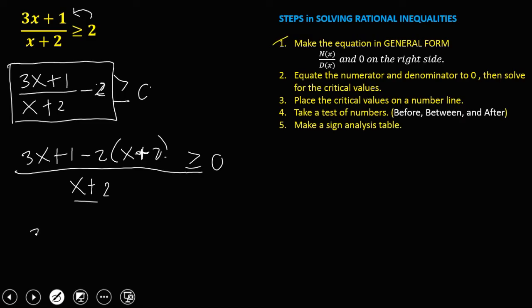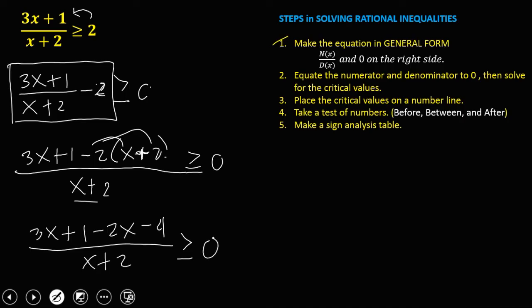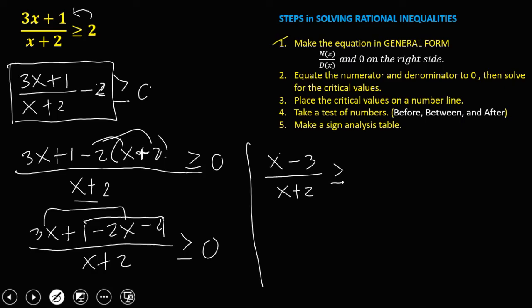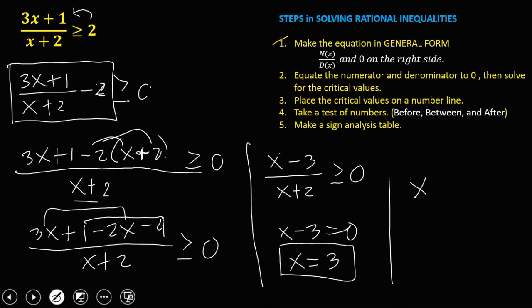Simplify by distributing: 3x plus 1 minus 2x minus 4, over x plus 2, greater than or equal to 0. Combining like terms: 3x minus 2x is x, and positive 1 minus 4 is negative 3. So we have x minus 3, over x plus 2, greater than or equal to 0. Now equate the numerator and denominator to zero: x minus 3 equals 0, so x is positive 3. And x plus 2 equals 0, so x is negative 2. These are the critical values.